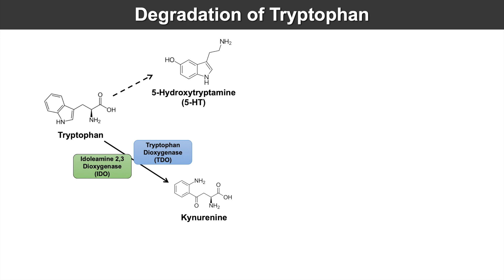Interestingly, these two enzymes are activated by different cytokines. Indolamine 2,3-dioxygenase is activated by interleukin-1, interleukin-6, and tumor necrosis factor. And tryptophan dioxygenase is activated by the stress hormone cortisol. So stress and alterations in the immune system can activate these two enzymes, leading to the metabolism of tryptophan into kynurenine.